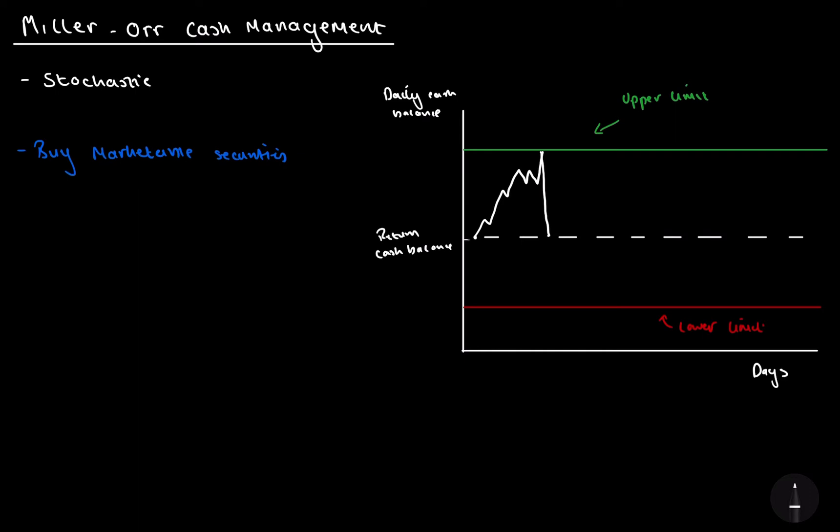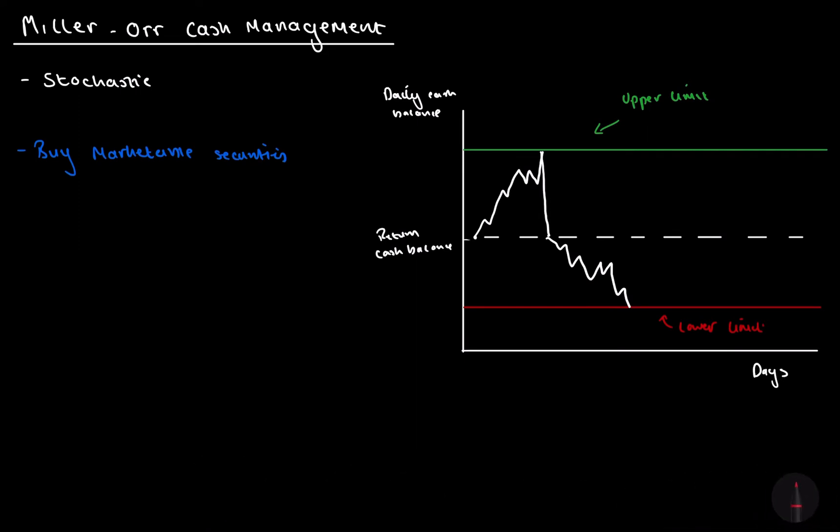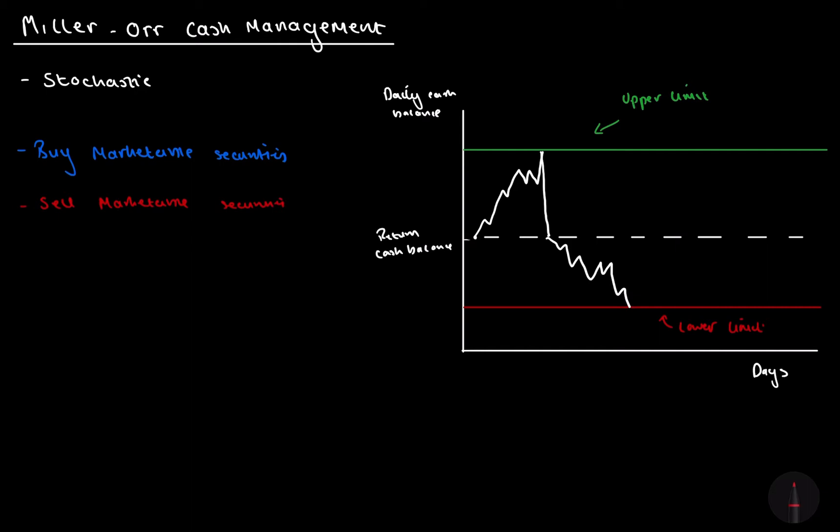Now, let's say we have a lot of spending. We have loads of spending during the month, let's say possibly because of coronavirus, changing political ideology. And what happens is we hit this lower limit. Once again, when we hit this lower limit, we're going to have to sell marketable securities to try and get back up to our return point.